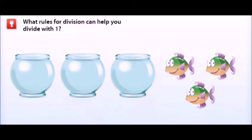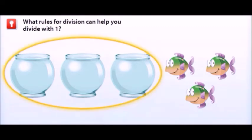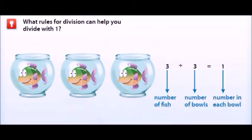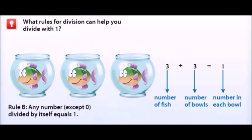Now let's say you have 3 bowls and 3 fish. If you have the same number of fish and bowls, each bowl gets 1 fish. You can create a division sentence: there are 3 fish, and there is 1 fish in each bowl. So 3 divided by 3 is 1. This is another division rule: any number except 0 divided by itself equals 1.